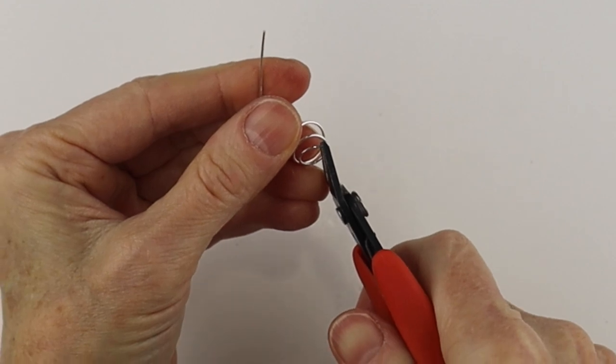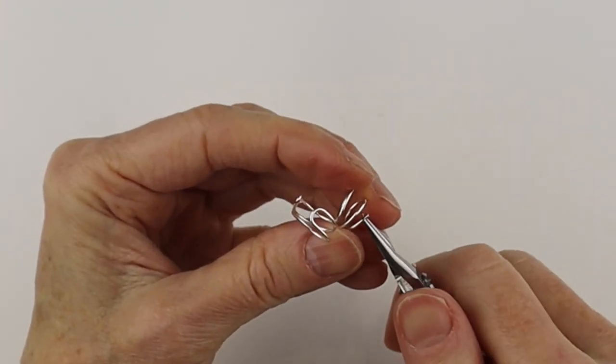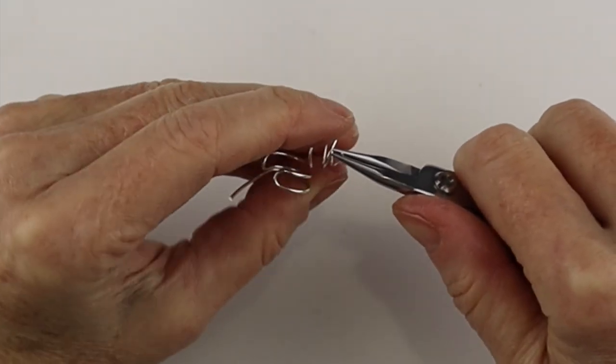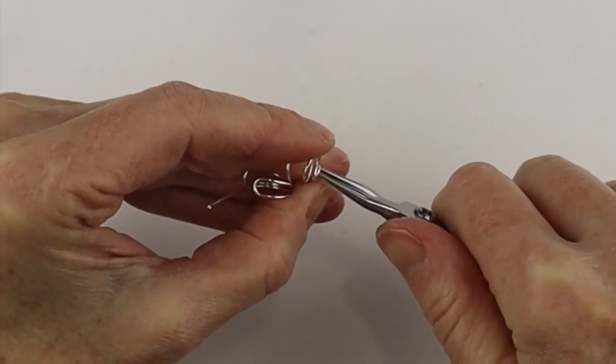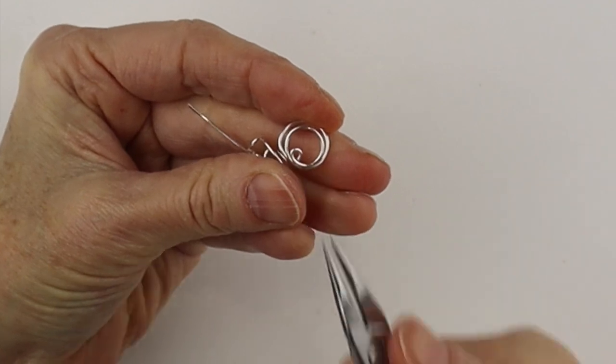And then we're going to clip this flush. From there, we'll get our round pliers, hold the end, and just with the flick of the wrist, we're just going to turn this end around. So it's closed there.